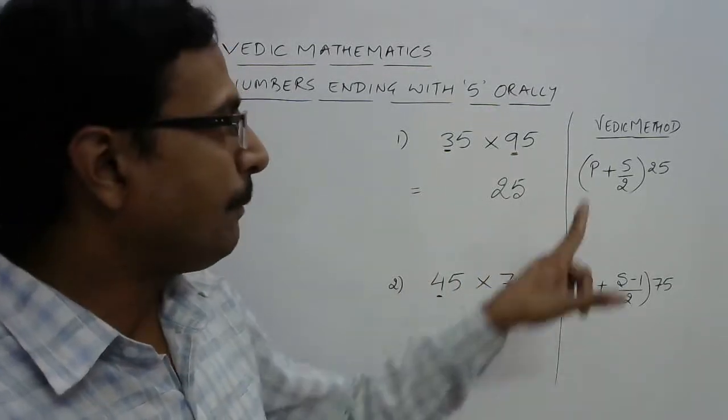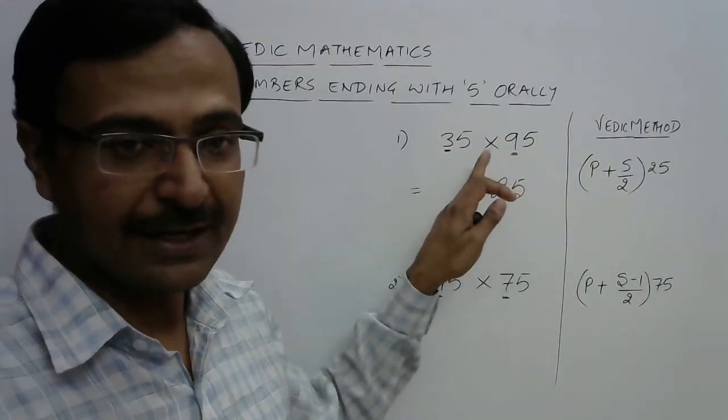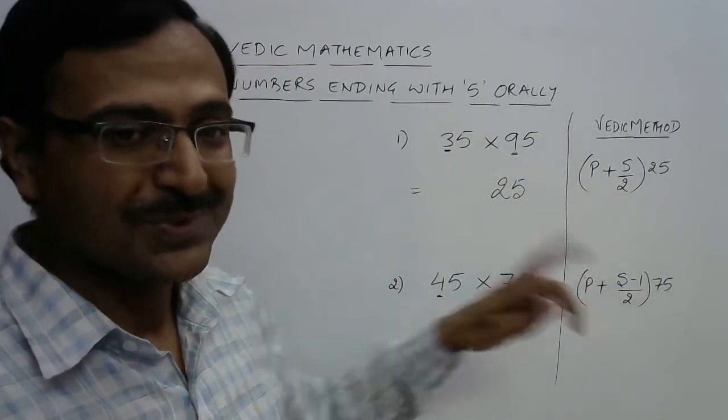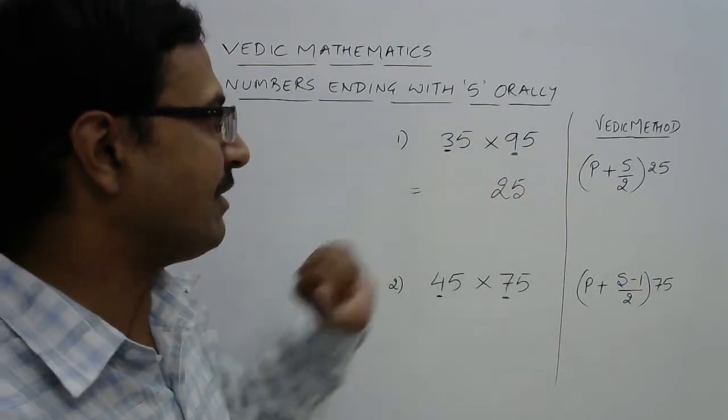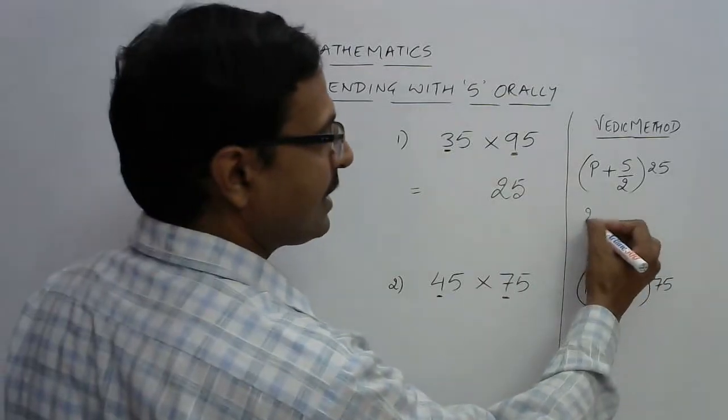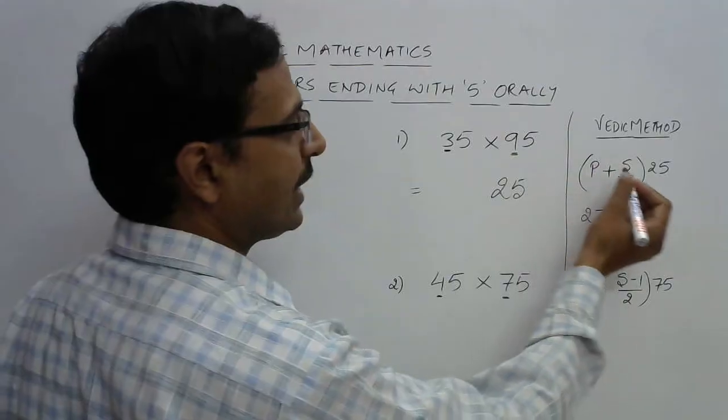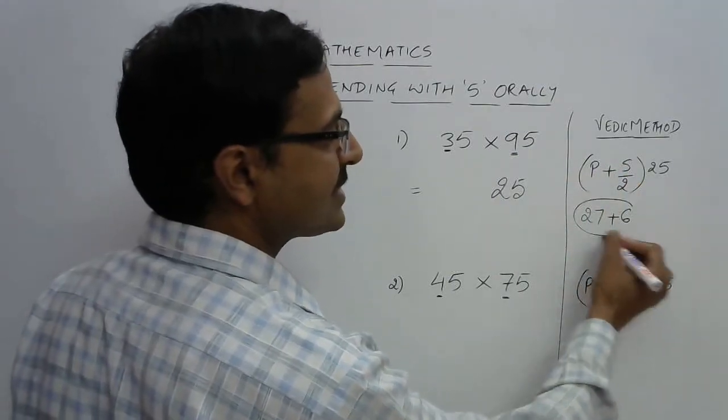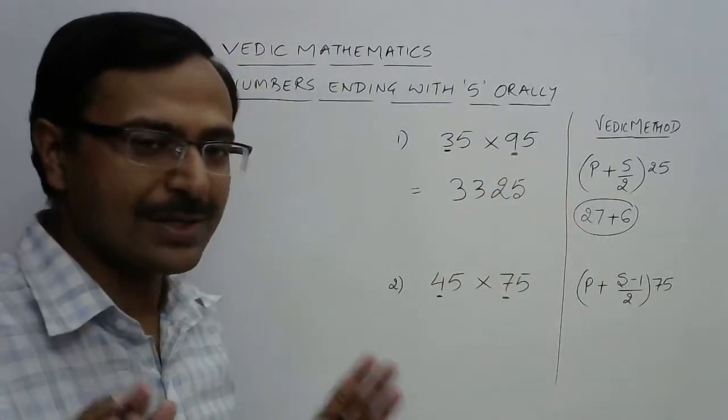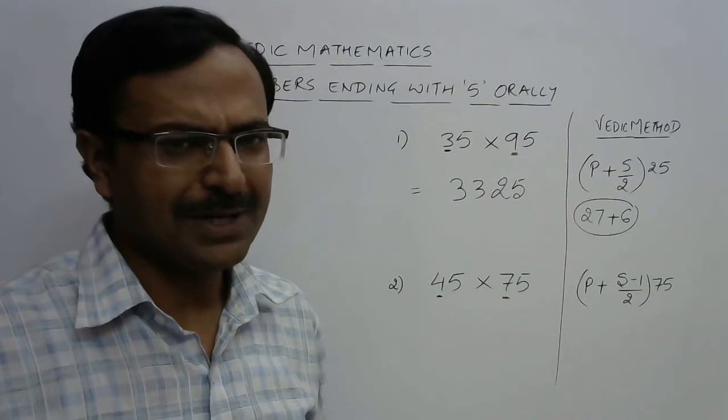And what will be the remaining part? That will be product plus sum by 2. So product 3 × 9 is 27, plus the sum 3 + 9 = 12, and half of 12 is 6. So what is the sum of these two numbers? 33. So just write 33 here and you get your answer: 3325.